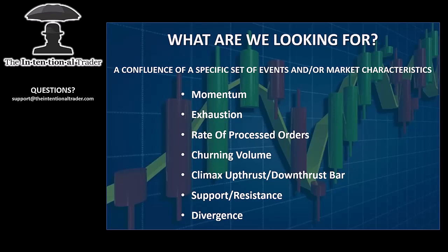What we're looking for is a confluence of a specific set of market conditions. Each one you see on this list — an entire trading system could be built around each one, and many have. That's how I learned about most of these as I was trying to trade a momentum system, an order flow system, support and resistance, divergence. Then I decided: what if I just looked for all of those things happening at the same time? That's when things started really changing for me.